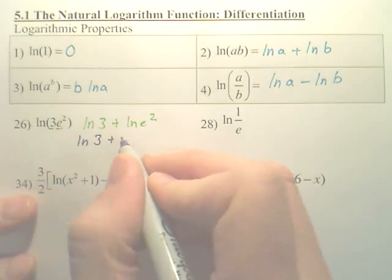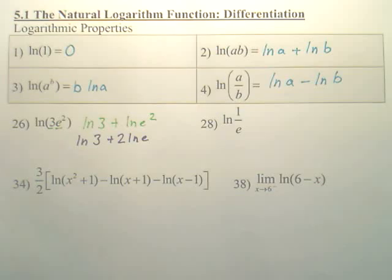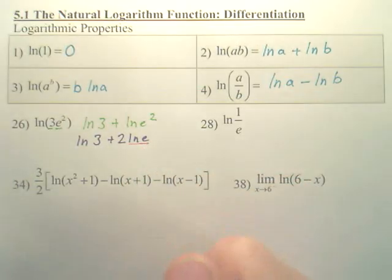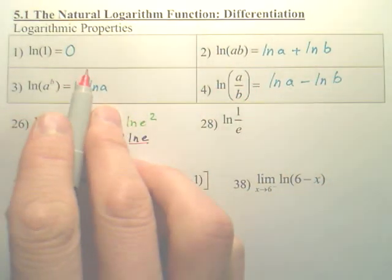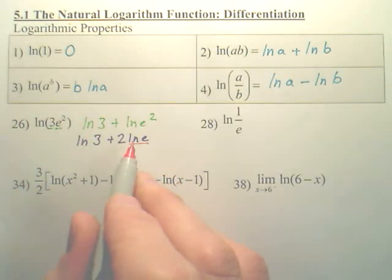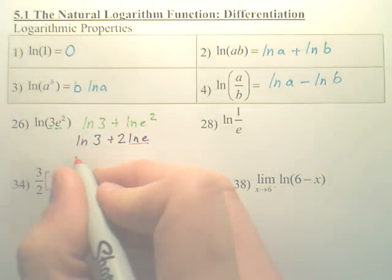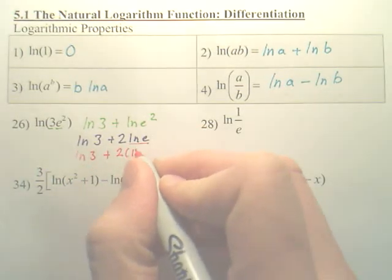So this actually ends up being ln 3 plus 2 ln e. Now one more thing: this ln e actually is one—that should have probably been one of these properties, but that in itself is one. And I'll tell you in a little bit where that comes from, but that is one. So I now would have ln 3 plus 2 times 1.